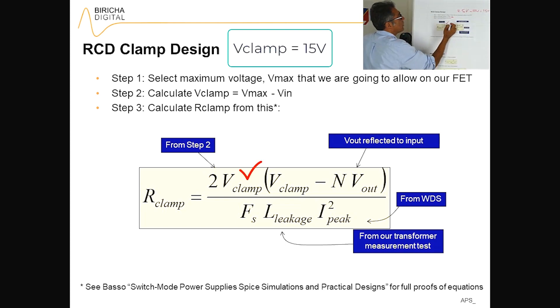So you know this value, you know this value. We said for simplicity that the turns ratio was 2, so you know this value, and we know that the output voltage was 3.3 volts, so you know this value also. Then the switching frequency of your power supply you obviously know.